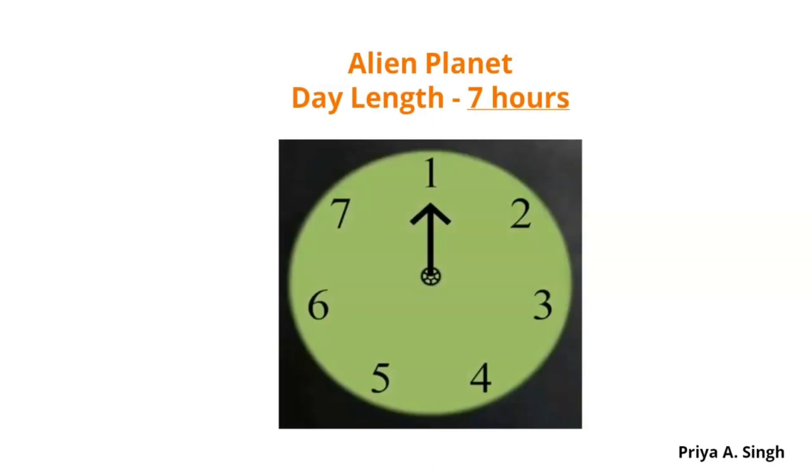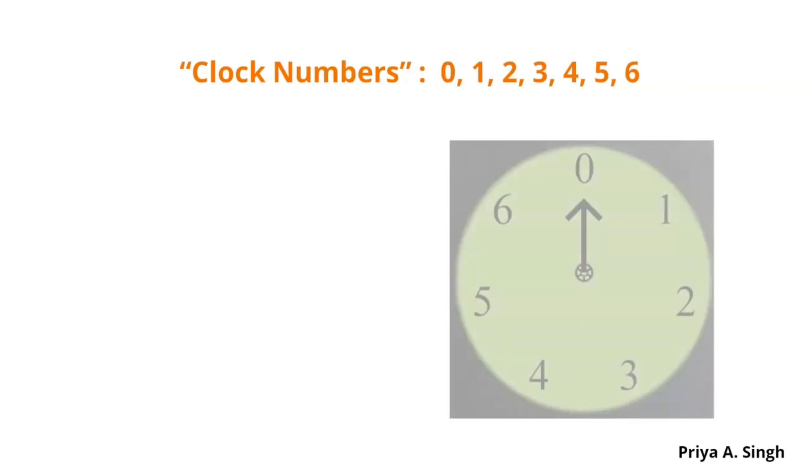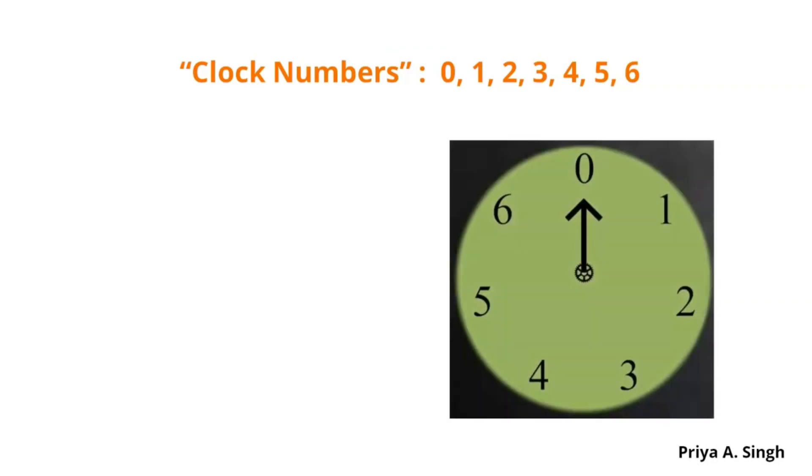Let us assume that we live on an alien planet where the length of the day is 7 hours. So, the clock will look something like this, that is from 1 to 7. Now, suppose that the clock numbers begin from 0. So, the clock will be with the numbers 0, 1, 2, 3, 4, 5, and 6 to make the total of 7 hours.